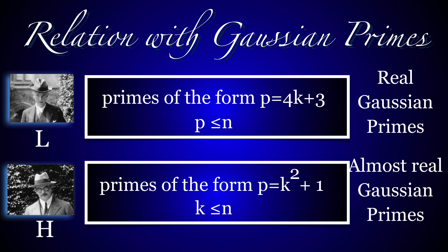We haven't seen why the two classes L and H are natural. To understand their importance, we have to go into the complex plane. The L primes are the real Gaussian primes in a strip from 0 to n.